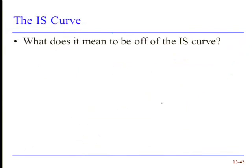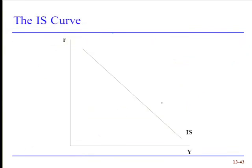Now, what does it mean to be off the curve? So let's suppose that we start at a real interest rate of R0. Y0, of course, will be the equilibrium level on the IS curve. But suppose we're at point B. So what does point B mean for us?